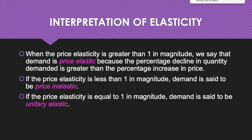In general, the price elasticity of demand for a good depends on the availability of substitute goods. When there are close substitutes, a price increase causes consumers to buy less of the good and substitute others, so demand will be highly price elastic — the percentage decline in quantity demanded will be greater than the percentage increase in price. When there are no close substitutes, demand tends to be price inelastic. The demand for necessities such as medicines tends to be price inelastic.